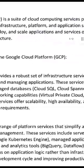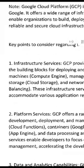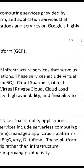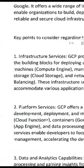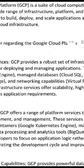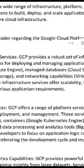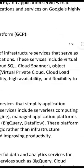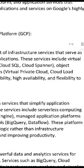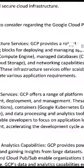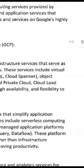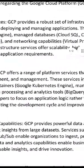The first key point to consider is infrastructure services. GCP provides a robust set of infrastructure services that serve as the building blocks for deploying and managing applications. This includes virtual machines, Compute Engine, managed databases, Cloud SQL, Cloud Spanner, object storage, Cloud Storage, and networking capabilities like Virtual Private Cloud and Cloud Load Balancing. These infrastructure services offer high availability and flexibility to accommodate various application requirements.